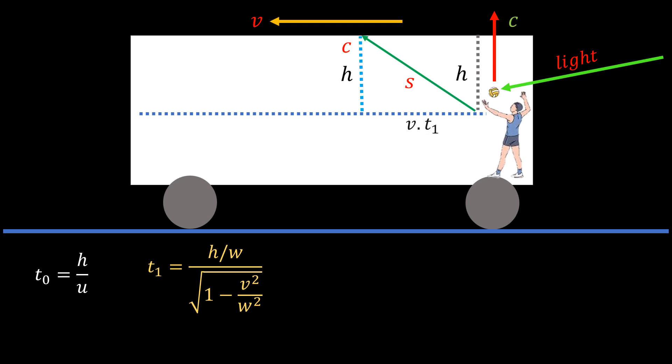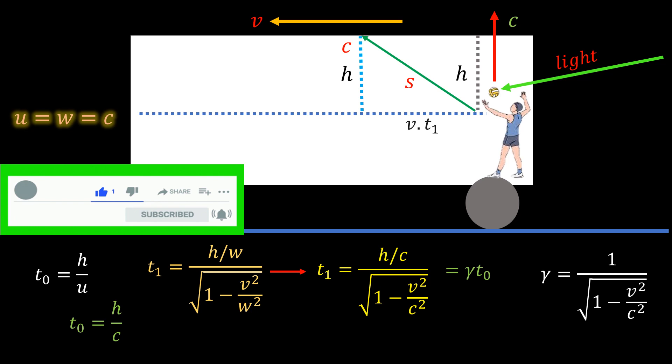In that case, u is equal to w, which is equal to c, speed of light. So, t0 becomes h over c, and t1 becomes h over c, divided by the square root of 1 minus v squared over c squared. So, we see that t1 is equal to gamma t0, where gamma is equal to 1 over this square root. And this is the time dilation formula. This formula is the cornerstone of special relativity, and is based on the assumption that light will travel at the same speed in both cases.